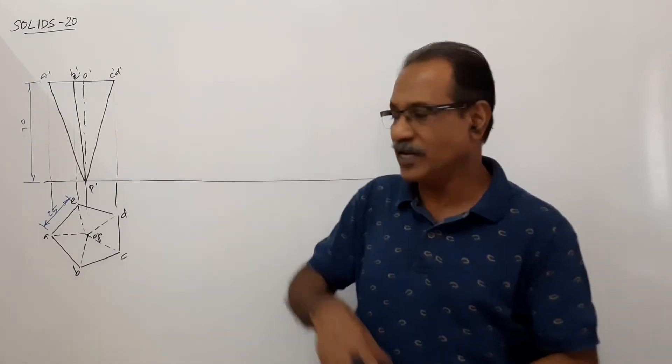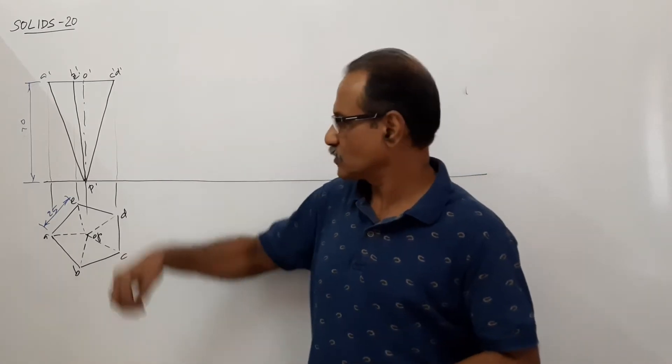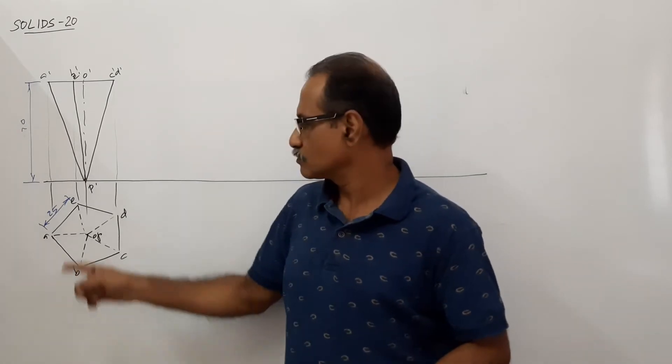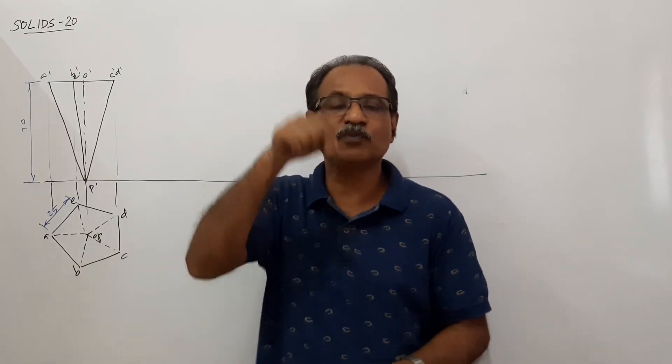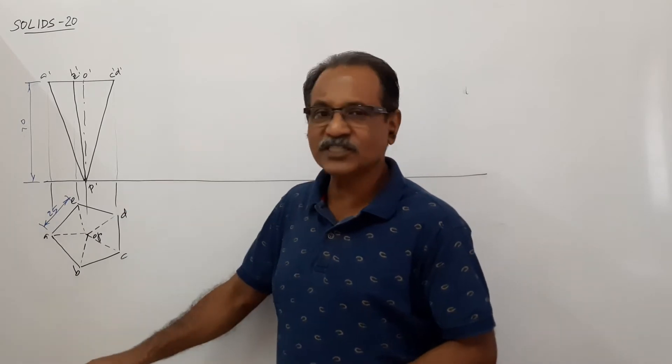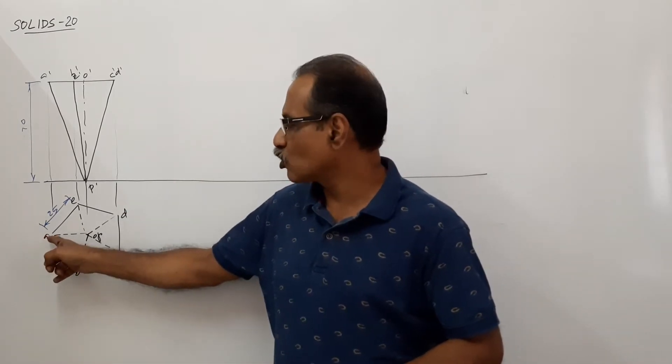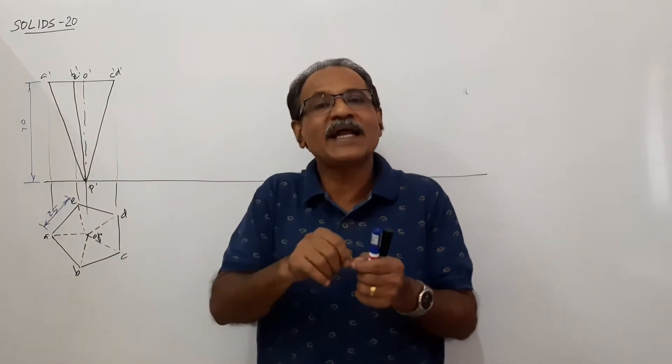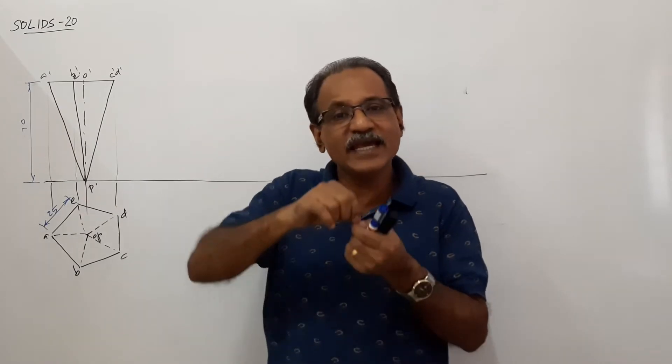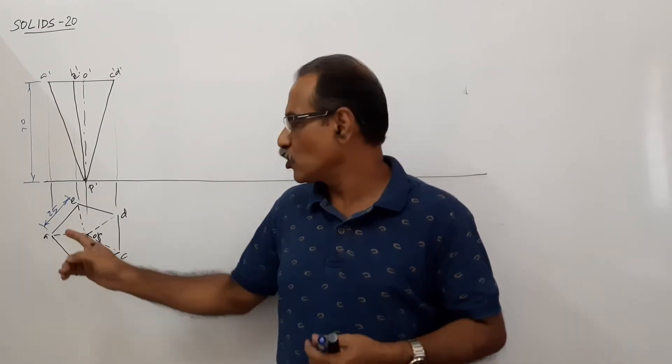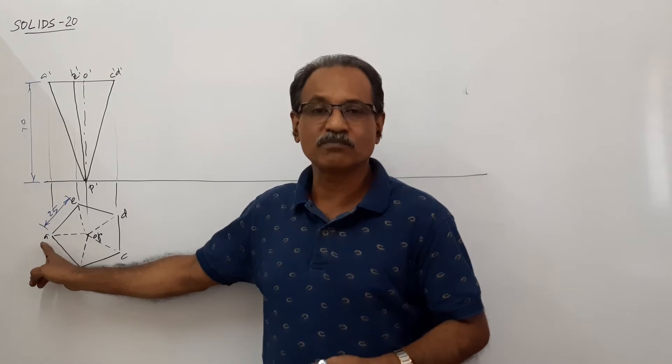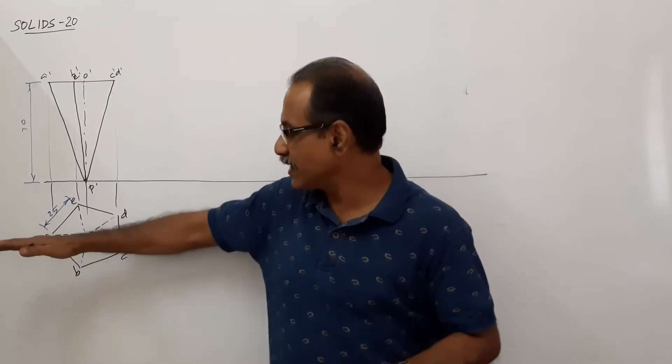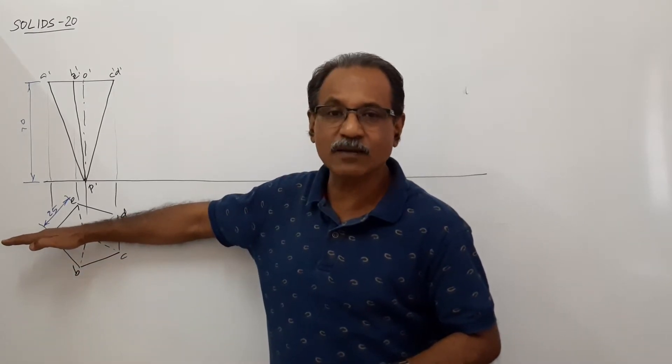I keep the pyramid inverted like this, inverted, standing on the apex, with axis perpendicular to HP. I have intentionally, purposefully brought one corner A on the left side. I plan to suspend it about A. A is kept on the left side with symmetry about this line.